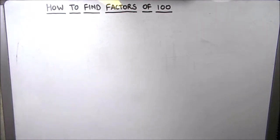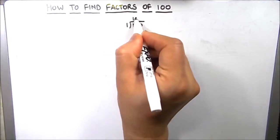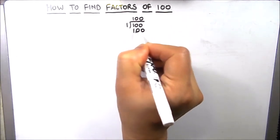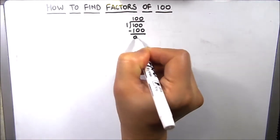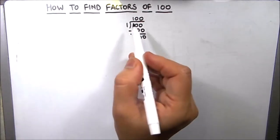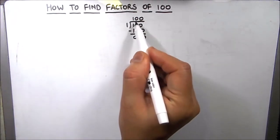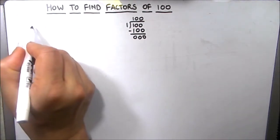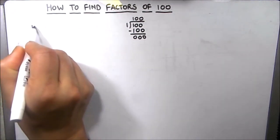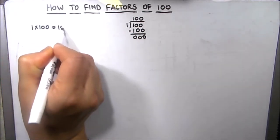The first number is 1. 100 divided by 1 will give us 100, as 1 times 100 is 100, and 1 is a factor of all numbers. So we got two factors from this division: 1 and 100. We are going to write our factors here on the left hand side — 1 times 100 is equal to 100.